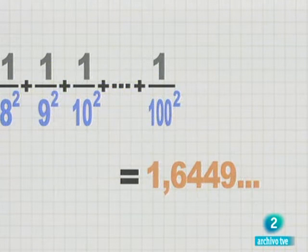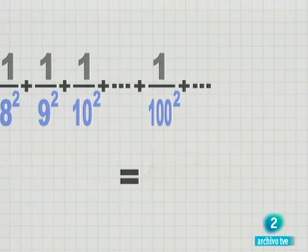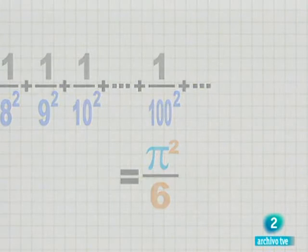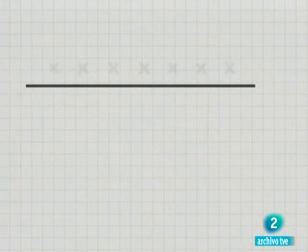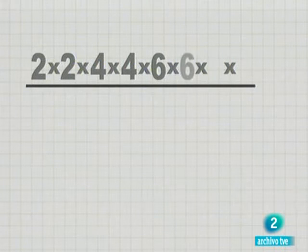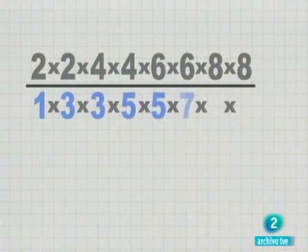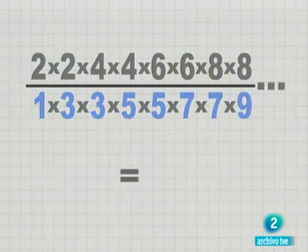Pero, ¿quién o qué era este número? La suma de la serie es pi cuadrado partido por 6. Pero Euler no se paró aquí. Siguió sorprendiendo a toda Europa con resultados como estos. En todos ellos aparece pi, un número emblemático para Euler.